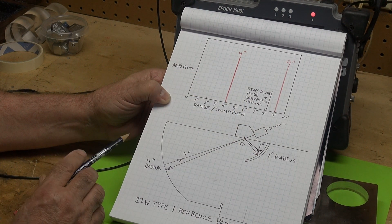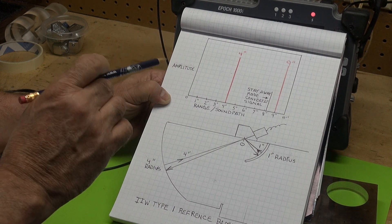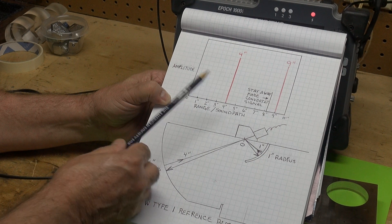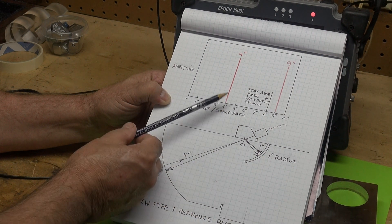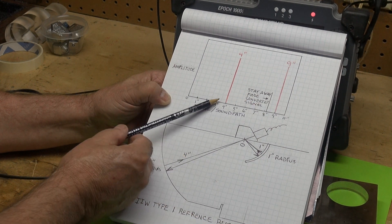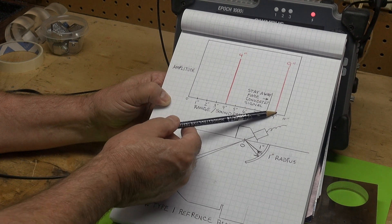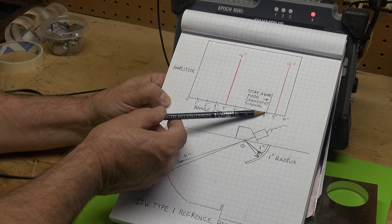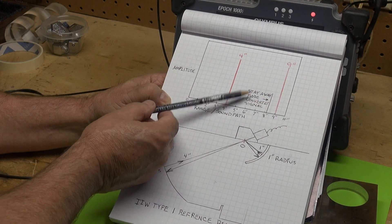That explains how this works. Now there's one caution I want to talk about. When you calibrate, set your range at 10 inches. Depending on the transducer, you'll definitely see the 4 and 9 inch radiuses, but you may see a signal coming up right around 8 inches or so.